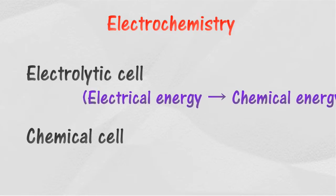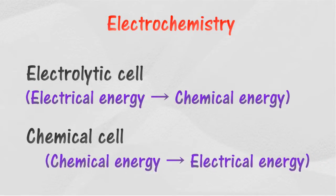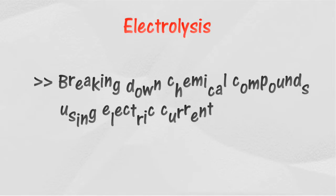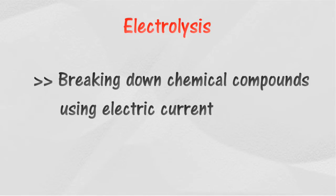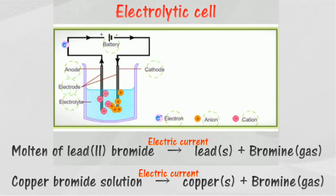An electrolytic cell is a type of cell which uses electrical energy to produce chemical reactions. A chemical cell converts chemical energy into electrical energy. In an electrolytic cell, electrolysis occurs. Electrolysis is the process of breaking down chemical compounds using electric current. In electrolysis, an electrolyte in the form of molten compounds or aqueous solution may break down into its elements.